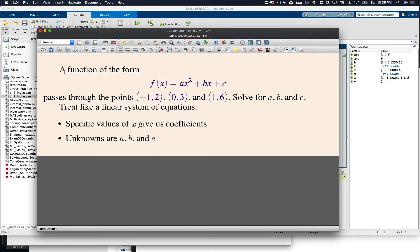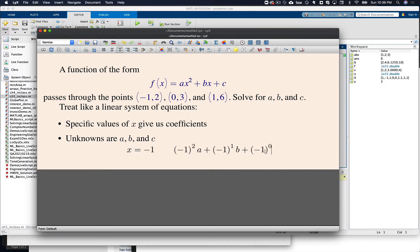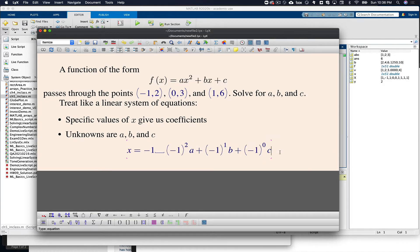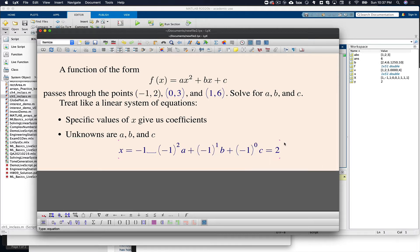So for example, the first data point gives us this. So I have a different power of negative 1, and we have a times negative 1 squared, b times negative 1 to the first, and c times negative 1 to the zeroth, right, because you can see here c is multiplied by an invisible 1, which is negative 1 to the zeroth. And then we'll equate this to 2, because that's what this is saying, that f is equal to 2.